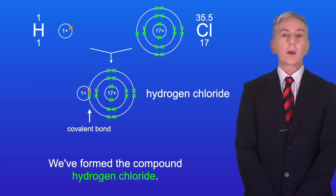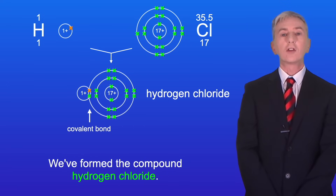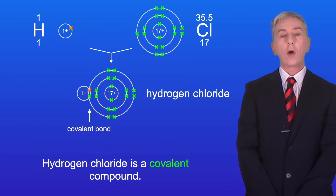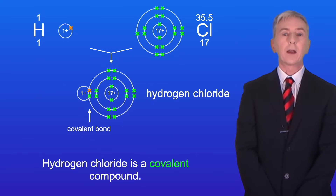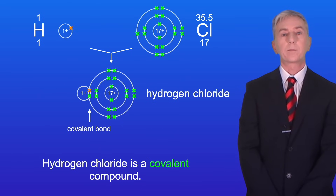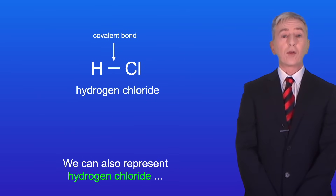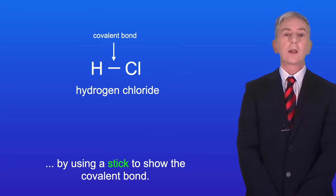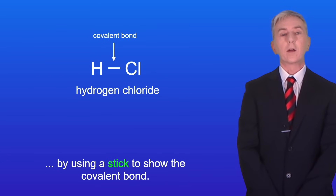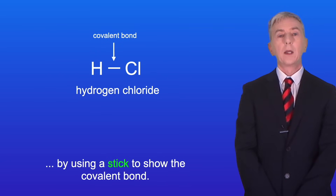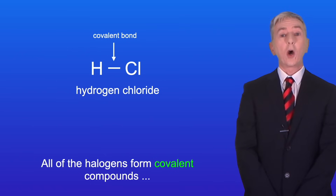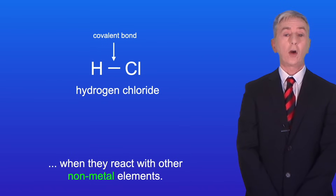We've formed the compound hydrogen chloride, and hydrogen chloride is a covalent compound. We can also represent hydrogen chloride by using a stick to show the covalent bond. All of the halogens form covalent compounds when they react with other non-metal elements.